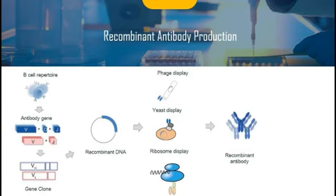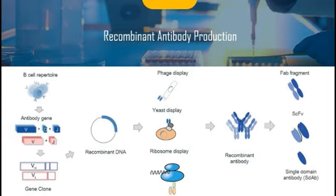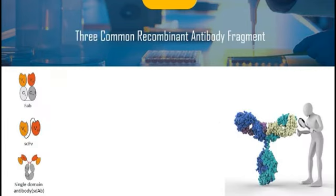According to these procedures, some recombinant antibodies can be constructed successfully, such as Fab antibody fragments, scFv antibody fragments, and single domain antibodies. There are three common recombinant antibody fragments listed: Fab, scFv, and single domain antibody (sdAb).